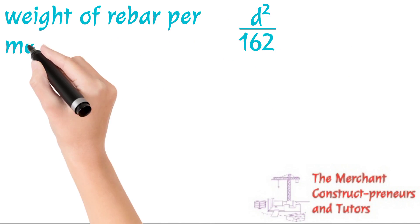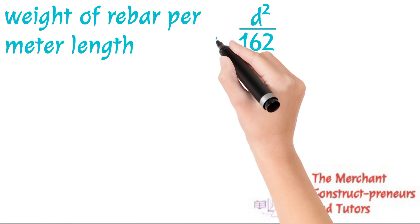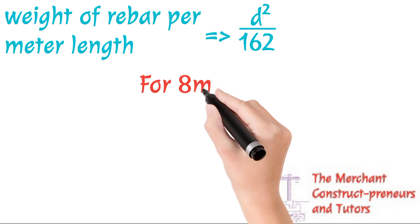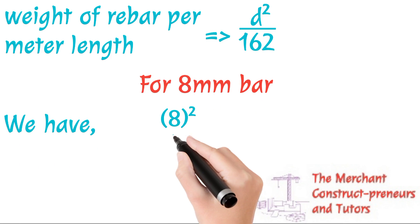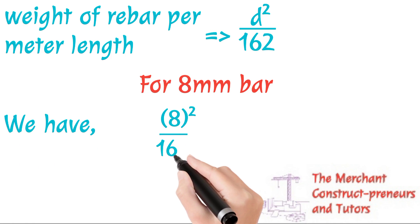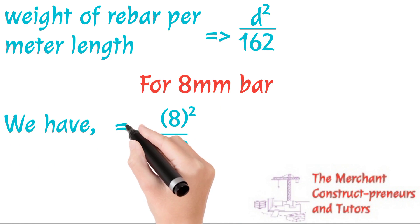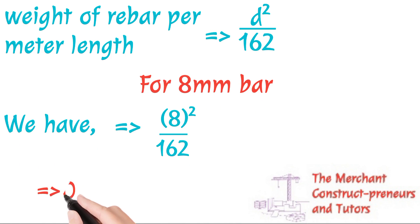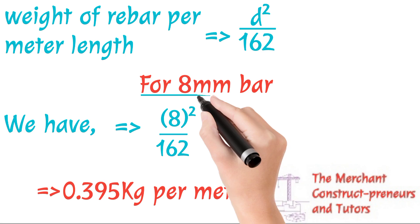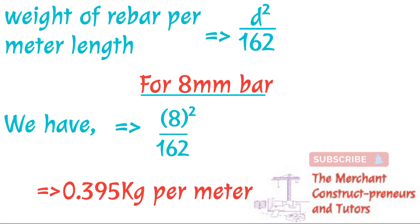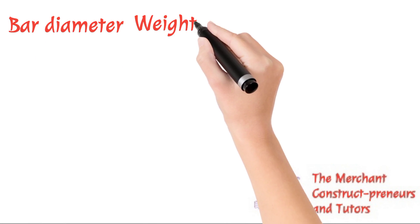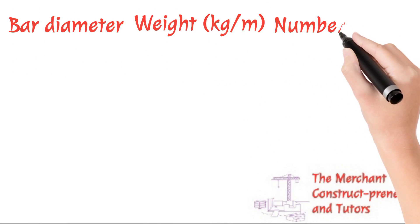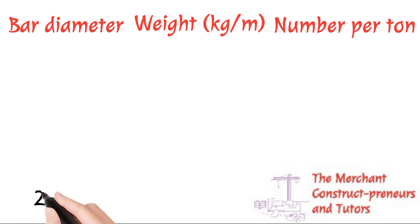So the formula for that is d² divided by 162. You know d, that's our diameter. The diameter we are considering is 0.008, that is in meters, and then using the millimeters that is 8mm squared. So we have this: 162 is a constant, so we have 0.395 kilogram per meter.